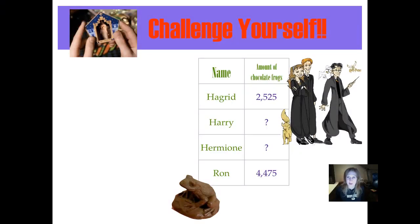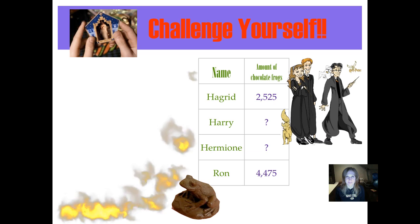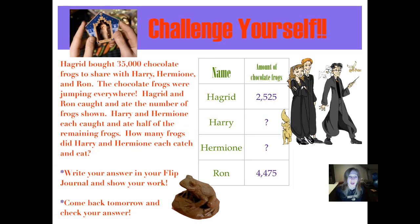It's time to challenge yourself — we've got a table this time. Hagrid bought 35,000 chocolate frogs to share with Harry, Hermione, and Ron. The chocolate frogs were jumping everywhere. Hagrid and Ron caught and ate the number of frogs shown in the table. Harry and Hermione each caught and ate half of the remaining frogs. How many frogs did Harry and Hermione each catch and eat? Write your answer in your flip journal and show your work. Come back tomorrow and check your answer.